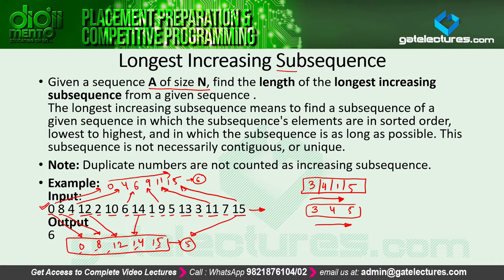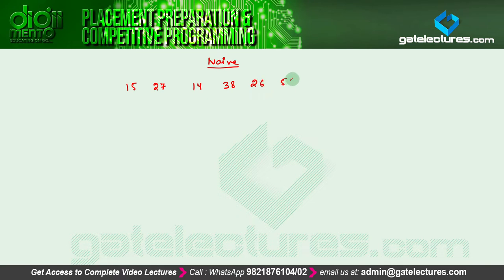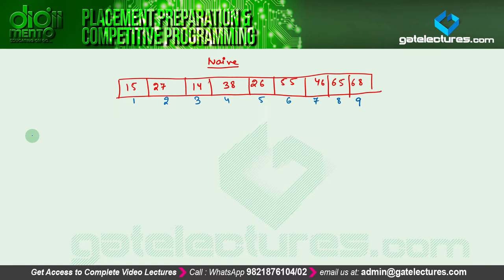So the question is: how can you solve it? What methodology can you apply? Let us figure out a very simple approach — what I'll call a naive algorithm. A naive algorithm is something very basic that everyone can easily implement. Assuming we have the sequence 15, 27, 14, 38, 26, 55, 46, 65, and 68, with index locations 1 through 9.